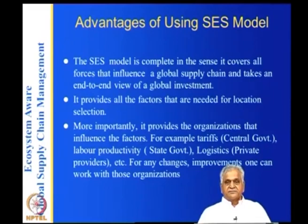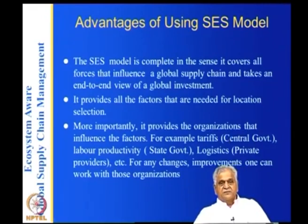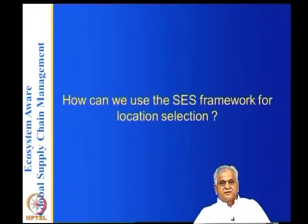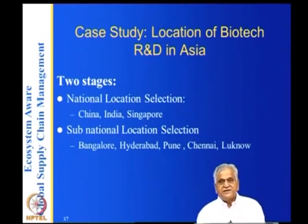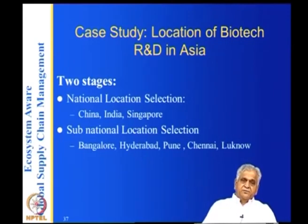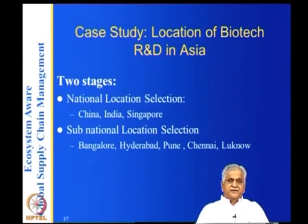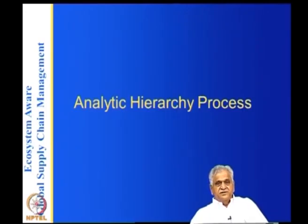For example, the golden quadrilateral linking major cities in India was supposed to be completed in 2012 but has not yet been finished. Infrastructure projects have significant cost and time overheads. For the two-stage case study of locating a biotech R&D facility, we selected three countries — China, India, and Singapore — and sub-national locations within India: Bangalore, Hyderabad, Pune, Chennai, and Lucknow.